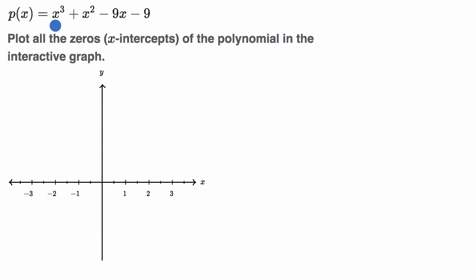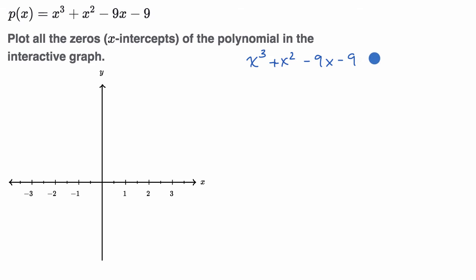To figure out the zeros of a polynomial, you essentially have to figure out the x values that would make the polynomial equal to zero. Another way to think about it is the x values that would make this equation true: x³ + x² - 9x - 9 = 0. The best way to do that is to try to factor this expression. This is a third degree polynomial, which isn't always so easy to factor.